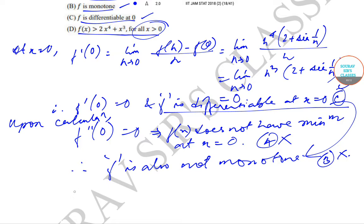Now if we try to find out option D, what we can see is that if we find f of 1/(2π), we'll see that this is less than 1/(2π)^4 plus 1/(2π)^3.